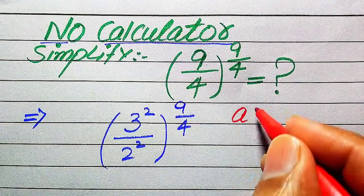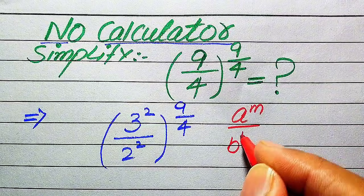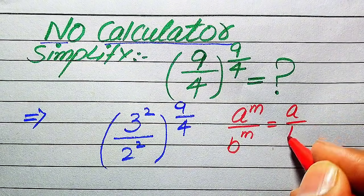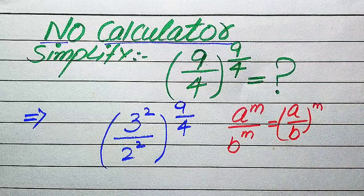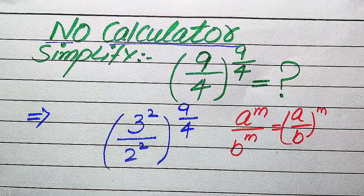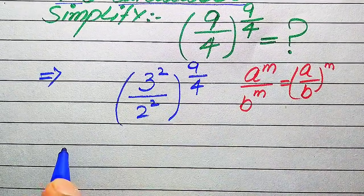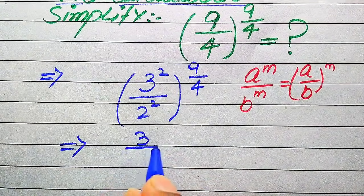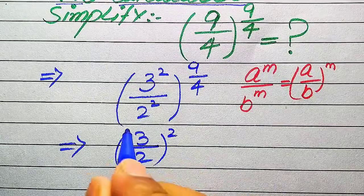Here we use a nice exponential law: if we have a to the power of m divided by b to the power of m, this equals (a divided by b) to the power of m. According to this rule of exponents, we combine the exponents of these two terms. After combining, it is written as (3 over 2) whole squared, with the whole power being 9 divided by 4.